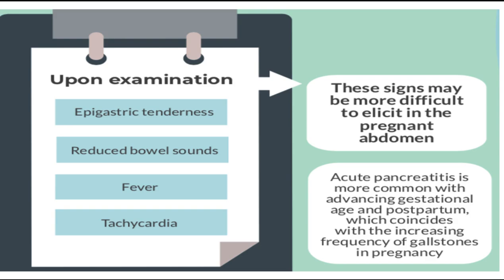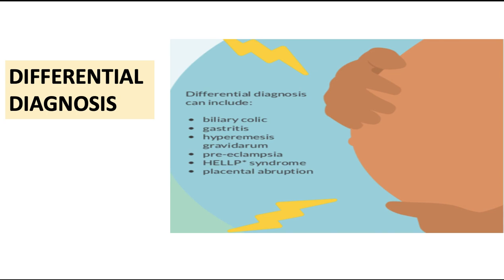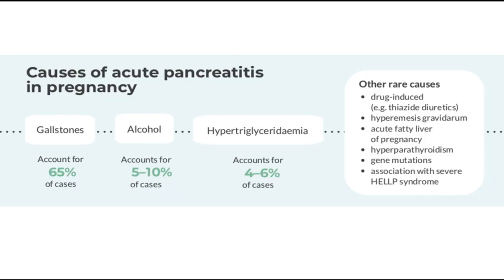The differential diagnosis includes conditions that mimic the same signs and symptoms: biliary colic, gastritis, hyperemesis gravidarum, preeclampsia, HELLP syndrome, and placental abruption. For any woman with epigastric pain radiating to the shoulder and tenderness, it is important to inquire about these other conditions which can mimic acute pancreatitis. This differential diagnosis is very important.